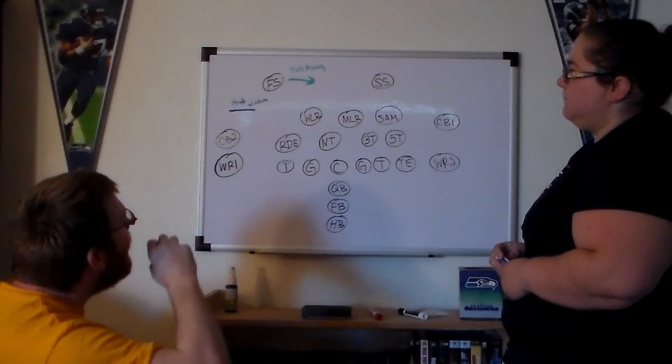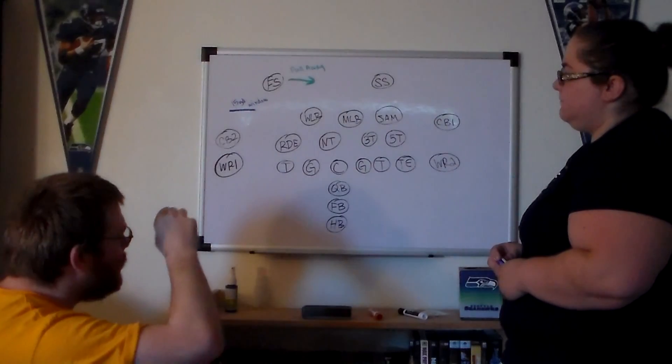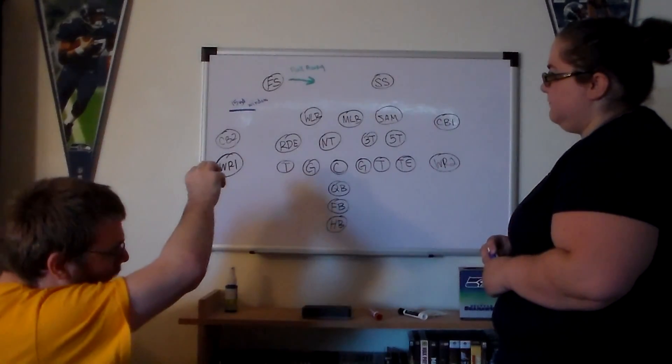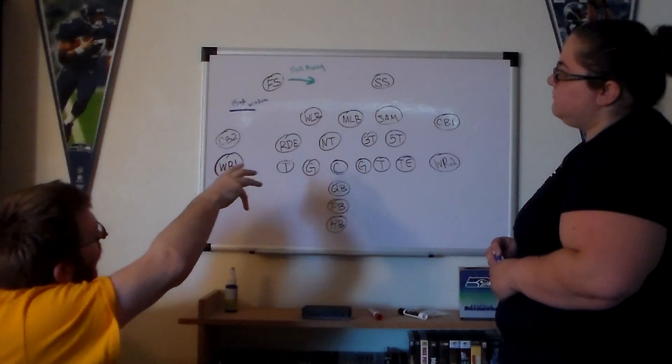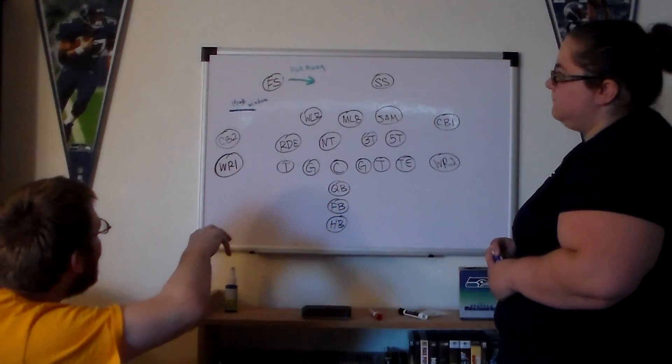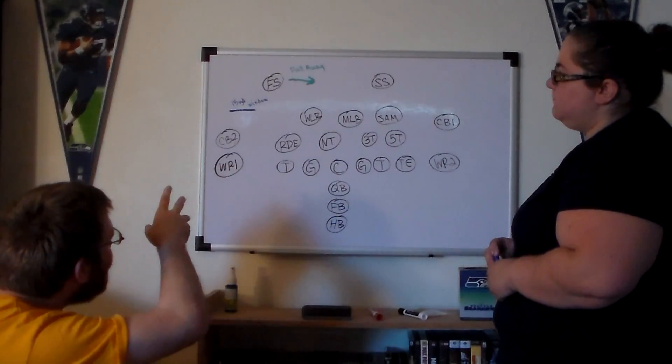You'll hear that a lot. The other option is you run play action, and he bites on the fake. He either comes down into the box or moves away from the route in some other fashion. So this is the maybe part.